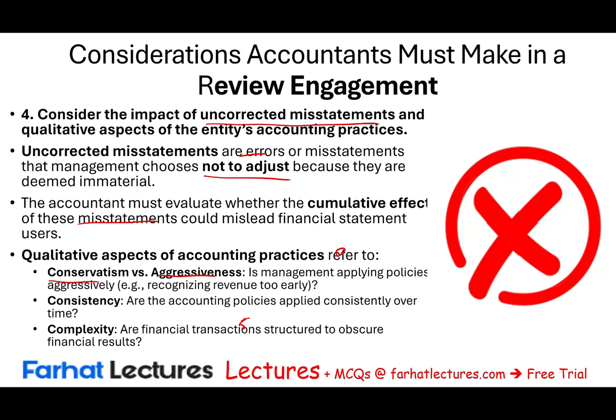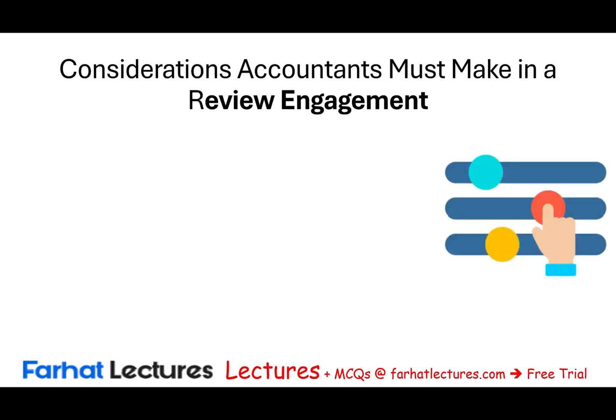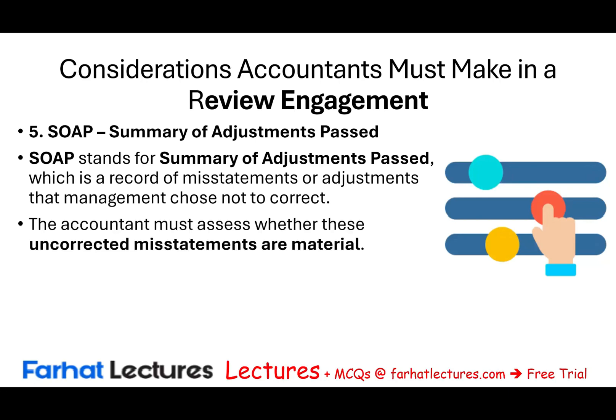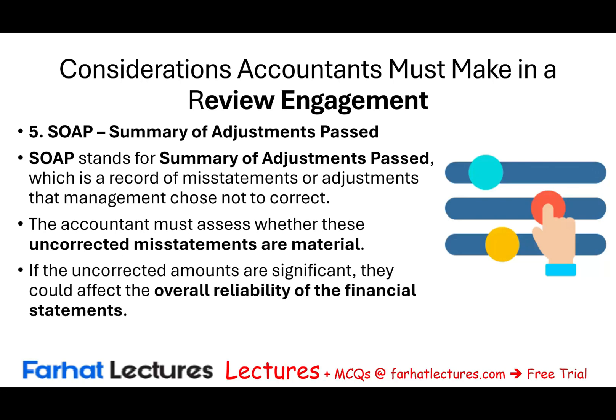We also have to look at the summary of adjustment paths — did they correct? We will have adjustments from prior periods or adjustments in this period that they did not correct. The accountant will assess whether these uncorrected misstatements are material. If the uncorrected amounts are significant, they would affect the overall ability — we would look at that as well.